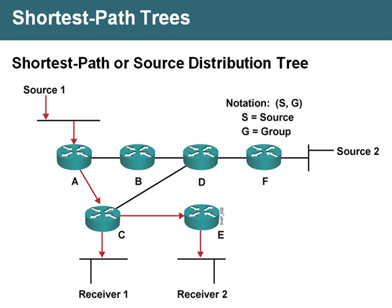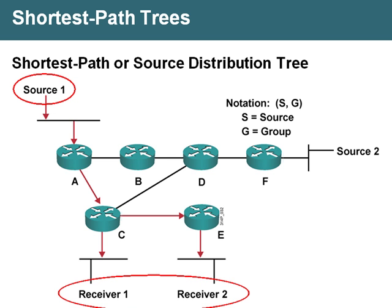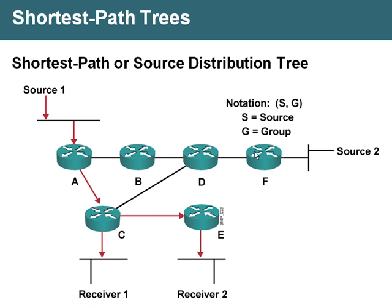Here is a simple example of a shortest-path tree. In the example, we have source-1 sending to both receiver-1 and receiver-2. The shortest path to get there is through routers A, C, and to receiver-1, then E to receiver-2. The notation for this would be S, G — where S stands for source and G stands for group.